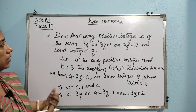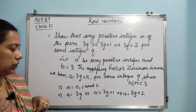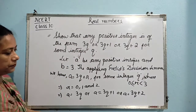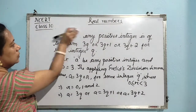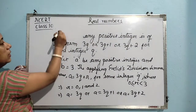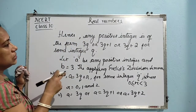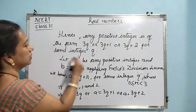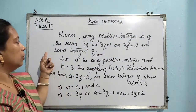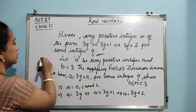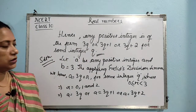Hence, any positive integer is of the form 3Q, or 3Q plus 1, or 3Q plus 2 for some integer Q. The solution starts from taking A as a positive integer and B as 3, and ends with these three cases. This is a very simple one and we will be doing some more problems.